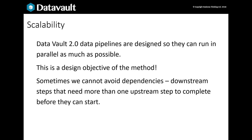Data Vault 2 loads are designed to run as much in parallel and as fast as possible. But sometimes we can't avoid dependencies. We want to avoid foreign key enforcement, sequence numbers and reference table lookups as much as possible. This is achieved by using derived primary keys — commonly a hashing algorithm, but other approaches will also work.